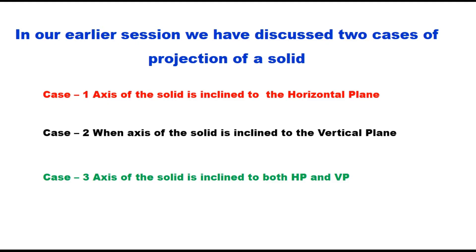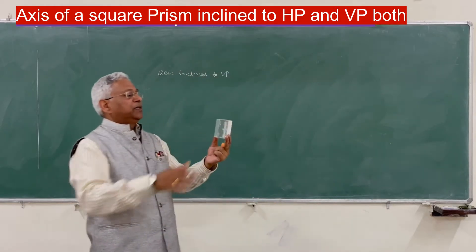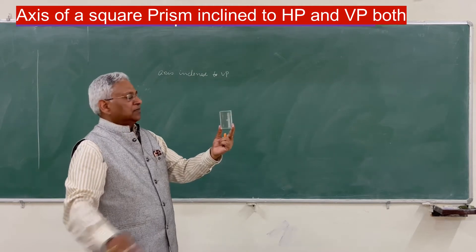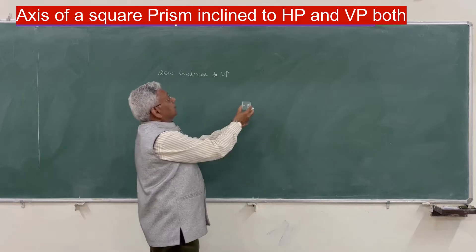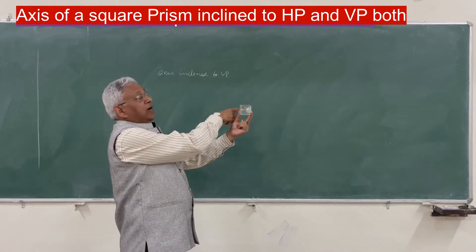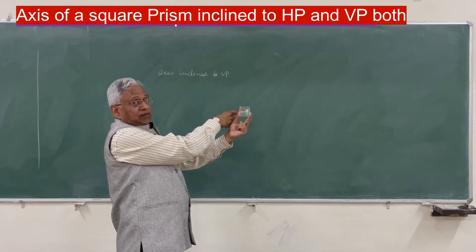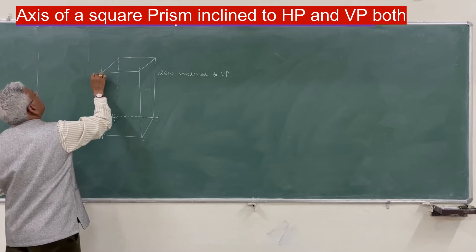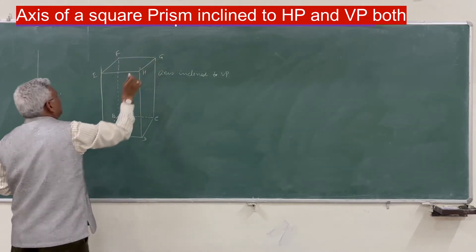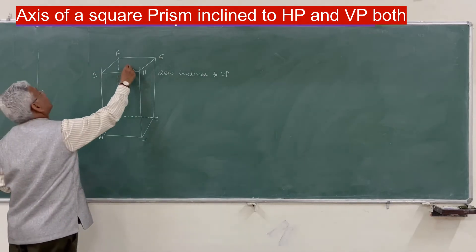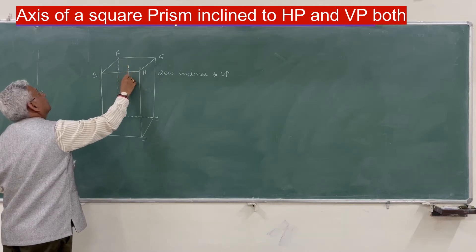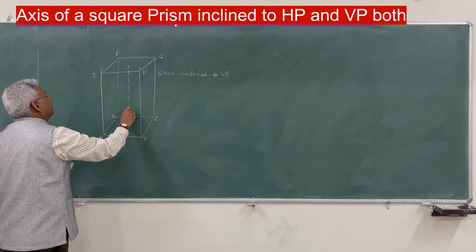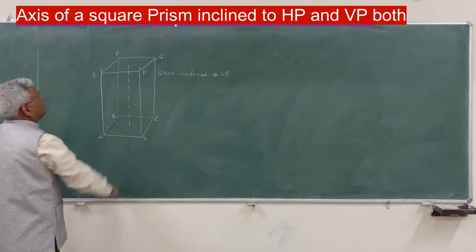In this example, we will place the solid first with its base in the vertical plane, and then start giving angle phi and then angle theta to the axis. Take this square prism and place it in the vertical plane. You see a square in the front and a square in the back side — the back square is not visible to the observer. Let us label the vertices: A, B, C, D for the bottom face and E, F, G, H for the top face, with O-O as the axis joining the centers of the two faces.